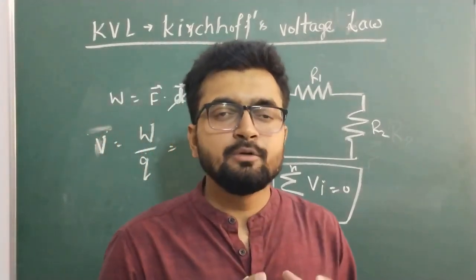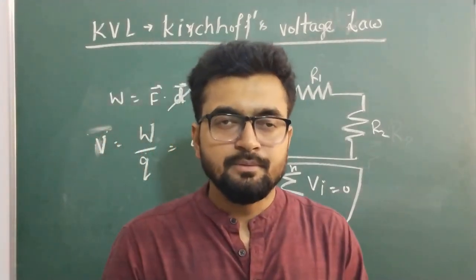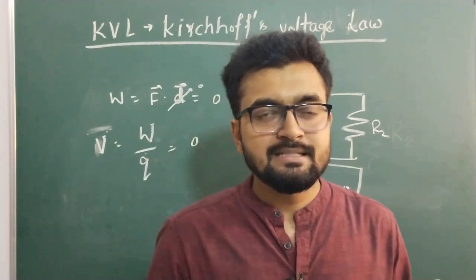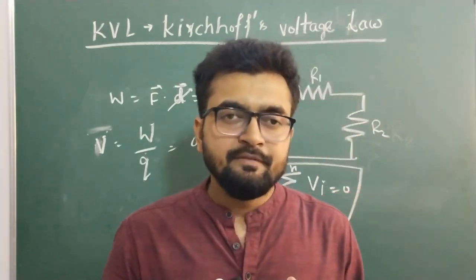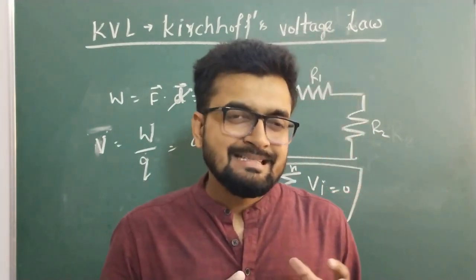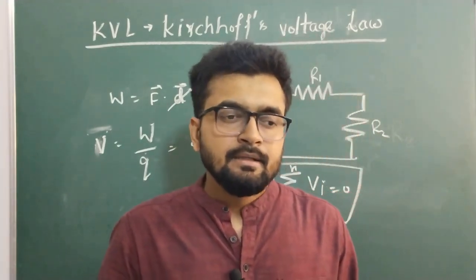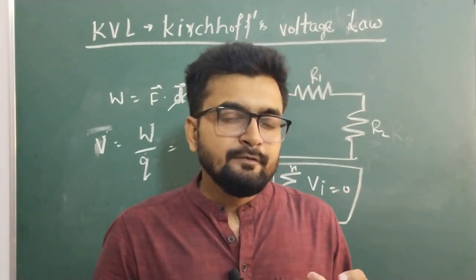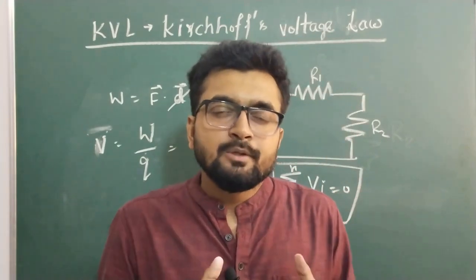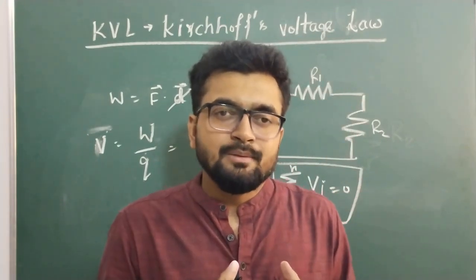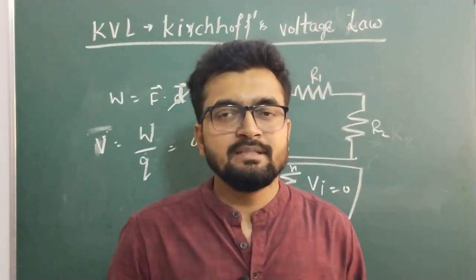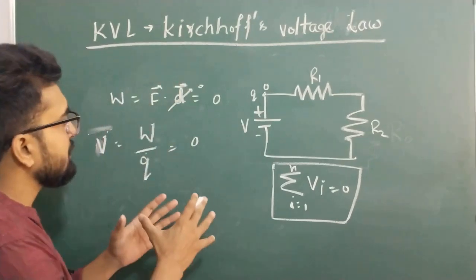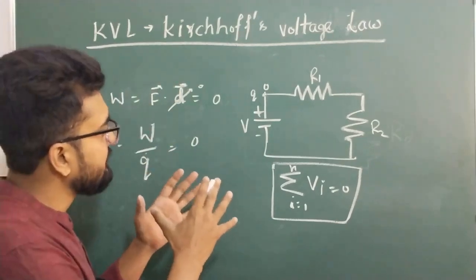Since the net displacement around the closed loop by the charge is zero, the work done is zero. We know that electric potential is the work done by the electric field to move a charge from point A to point B, expressed as V = W/Q. Since the net work done is zero, the net voltage around the closed loop is zero. That's the fundamental concept of KVL.